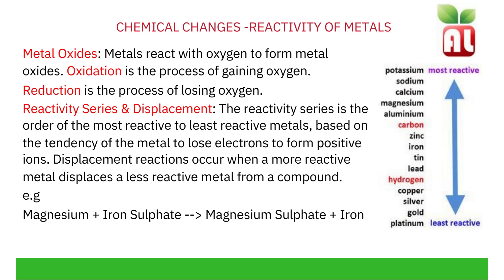Metal oxides are formed when a metal reacts with oxygen to form the metal oxide. Oxidation is the process of gaining oxygen. Reduction is the process of losing oxygen. In the process of forming a metal oxide, we say that the metal has been oxidized.